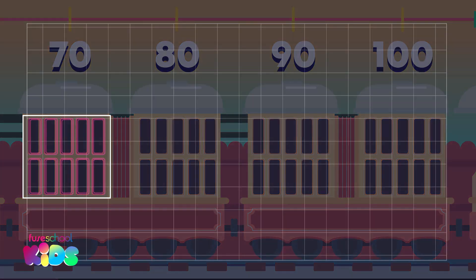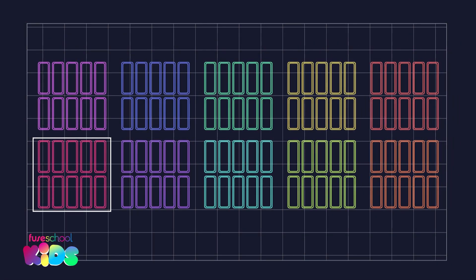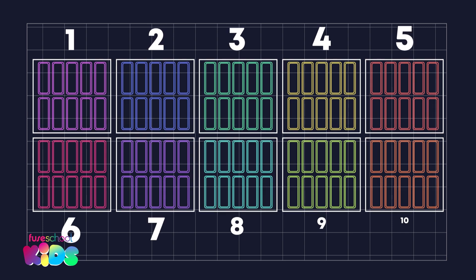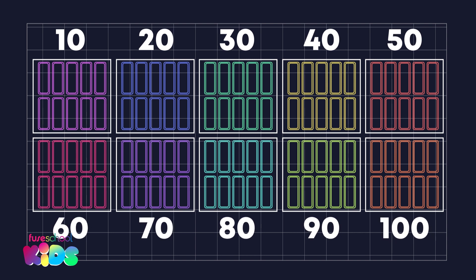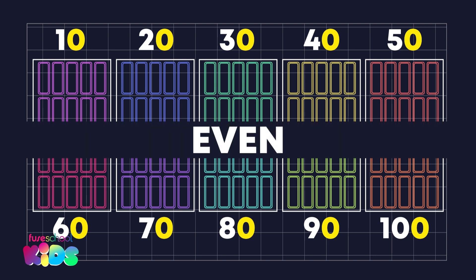How many groups of 10 windows are there? 10. That's right. 10 groups of 10 makes 100. What do you notice about the numbers when counting in 10's? Did you see that the numbers all end in zero? Good spotting! These are even numbers.